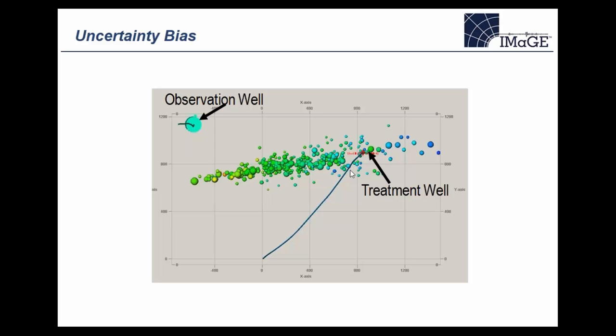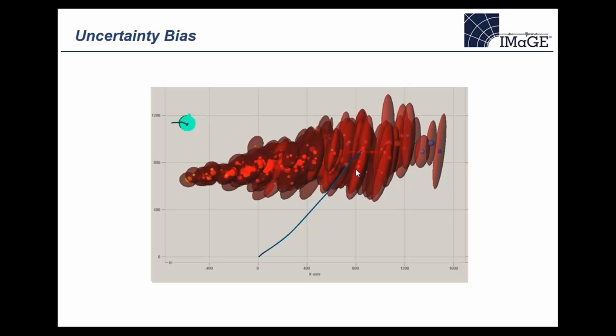You might interpret the spread of event locations near the treatment well as more fracture complexity or more natural fracture activation. But if you turn on the error ellipsoids, you can see they are much bigger in that region — as we get further from the monitoring well, the error ellipsoids spread out, and that increase in location uncertainty is causing the spread in locations seen in the image.